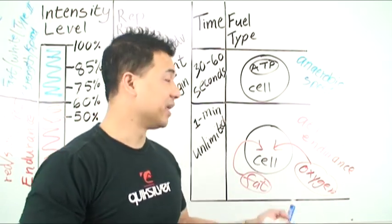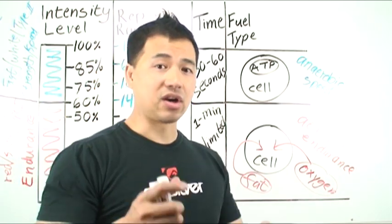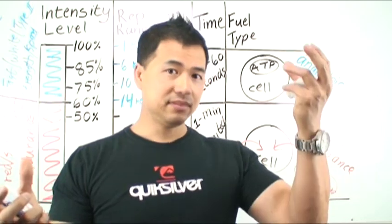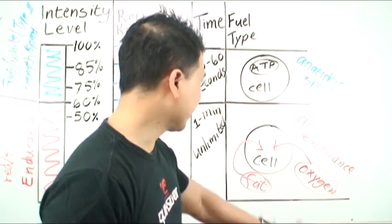That's where it gets its fuel from. These muscle cells are no different than your car engine. Your car engine needs air and it needs gasoline, diesel, kerosene, or ethanol to burn.